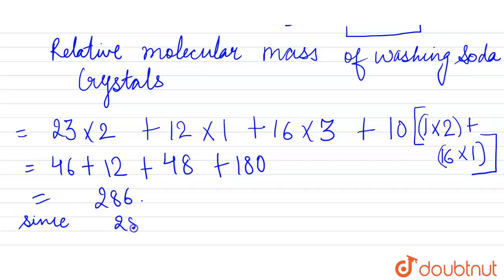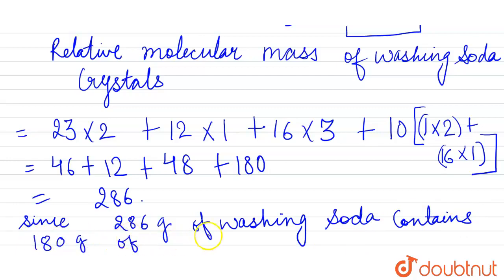Since 286 grams of washing soda contains 180 grams of water of crystallization.